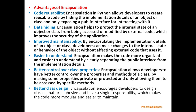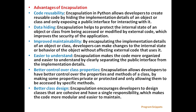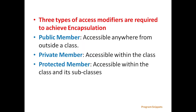Encapsulation allows developers to have better control over the properties and methods of a class by making some properties private or protected and only allowing them to be accessed by specific methods. Encapsulation also encourages developers to design classes that are cohesive and have a single responsibility, which makes the code more modular and easier to maintain. Three types of access modifiers are required to achieve encapsulation.